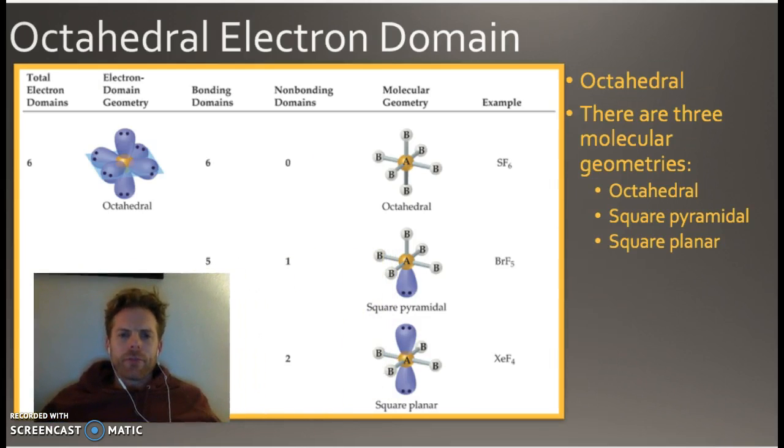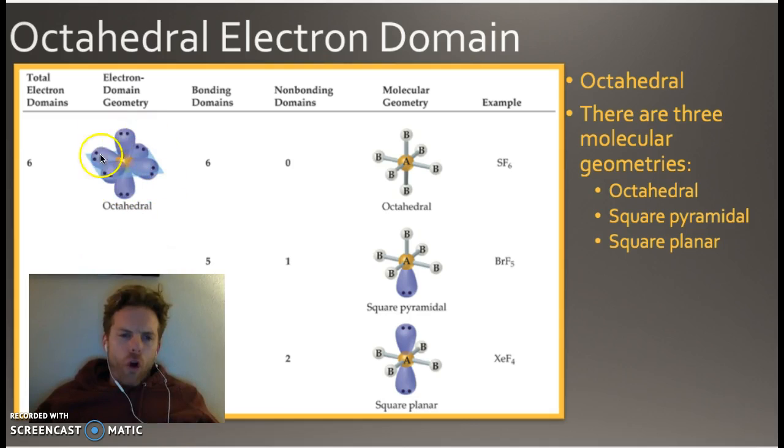Finally, we have octahedral. Octahedral, if all of them, if all six of them are bonds, you have octahedral, just straight up. If you have one of them as a lone pair, then it's called square pyramidal. And if you have two of them as lone pairs, then you have something called square planar. It looks like that, where kind of the axials are lone pairs and the equatorials are the bonding ones.